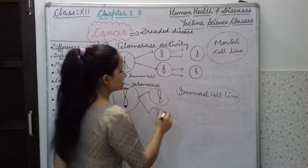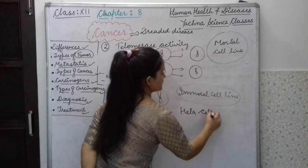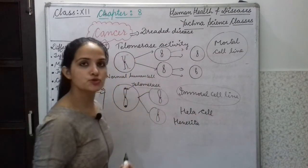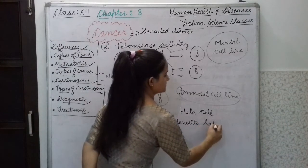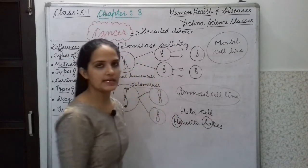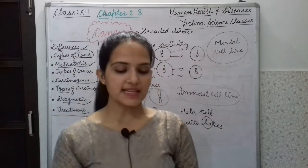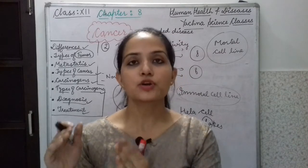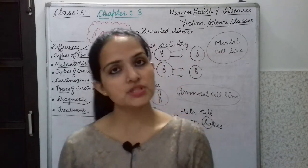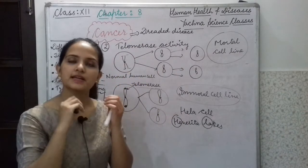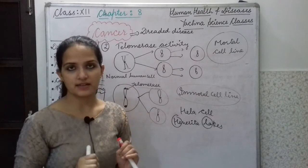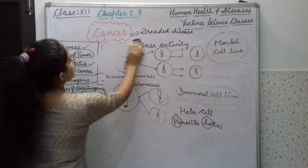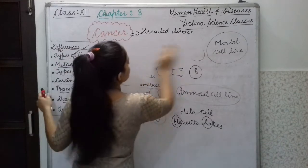In cancerous cells, the telomerase enzyme protects the telomere from being cut, so the chromosome size remains the same in every cancerous cell. Because of this, the cell cycle keeps going and never stops, resulting in uncontrolled growth — an immortal cell line. These cells that keep growing with uncontrolled, unstoppable growth are called HeLa cells.